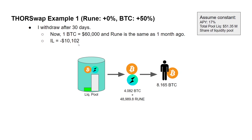Due to arbitrage in the pool, the Bitcoin amount decreases and RUNE increases to maintain the 50-50 ratio as Bitcoin's price rose. When I withdraw, I get back about 4 Bitcoin — whereas I put in 5 — and about 49,000 RUNE, whereas I put in 40,000. Since this is an asymmetric deposit, the withdrawal is only in Bitcoin, so the RUNE gets converted back to Bitcoin, giving me a total of 8.165 Bitcoin, down from the 10 I initially deposited.